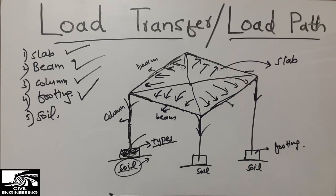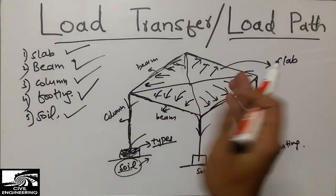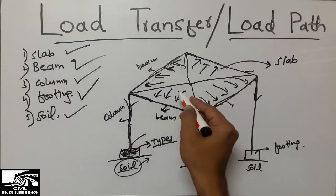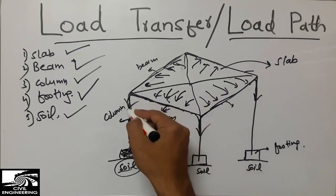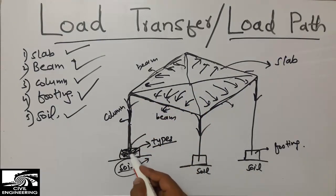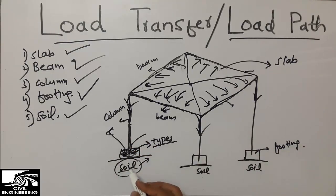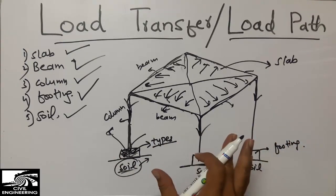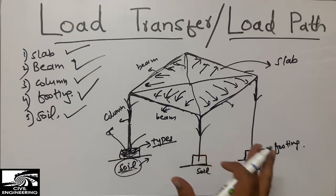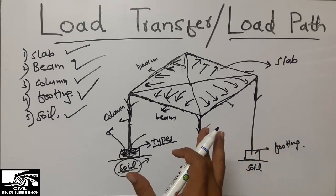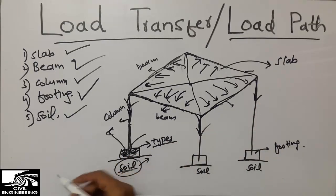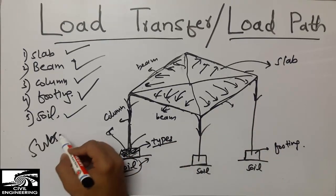So we safely transfer the load from slab to beam, beam to column, and column to footing, and the footing is able to resist the whole load. There will be no excessive pressure on the soil. This was all about the load transfer mechanism — how the load is transferred from one part to another. Please subscribe our channel for more civil engineering videos, and thank you for watching.